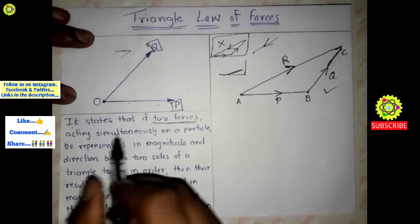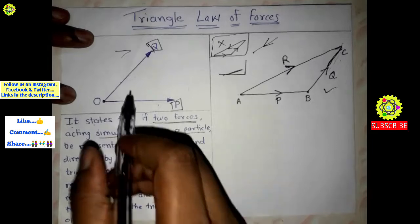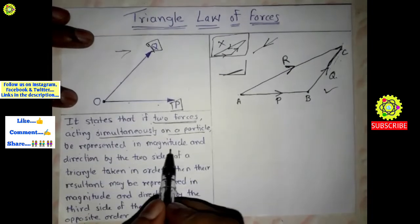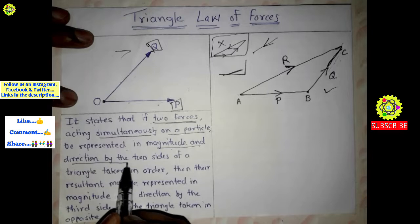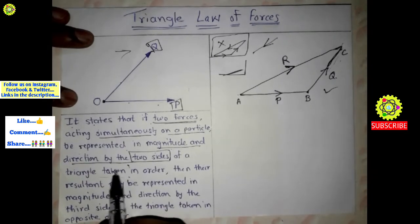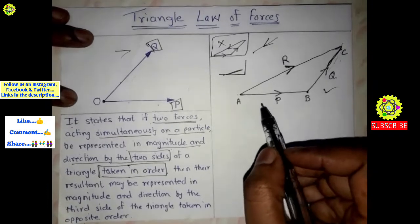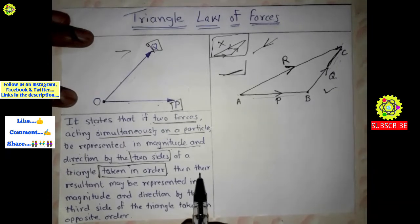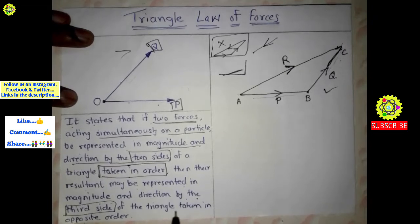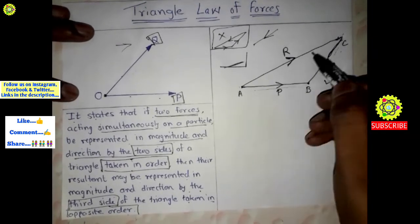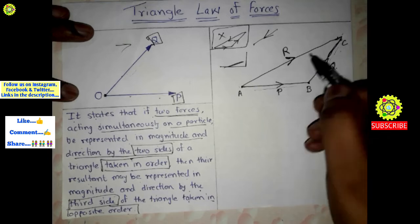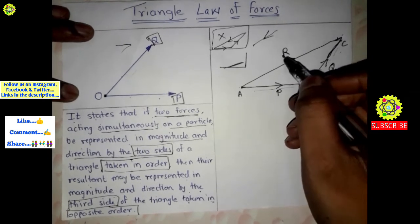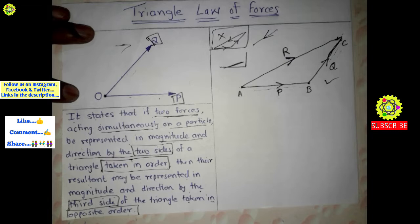Now we read the definition. The Triangle Law of Forces states that if two forces acting simultaneously on a particle are represented in magnitude and direction by the two sides of a triangle taken in order, then their resultant may be represented in magnitude and direction by the third side of the triangle taken in opposite order.